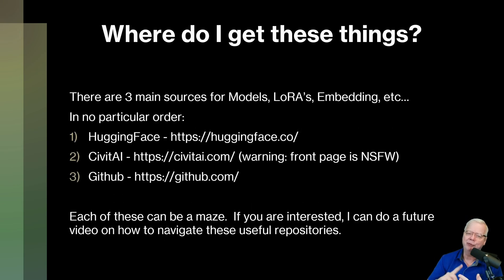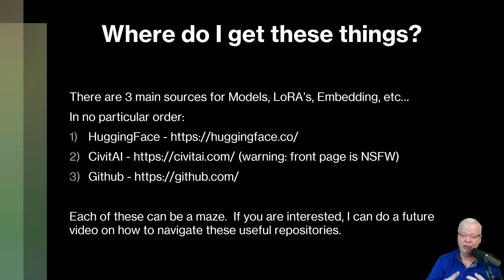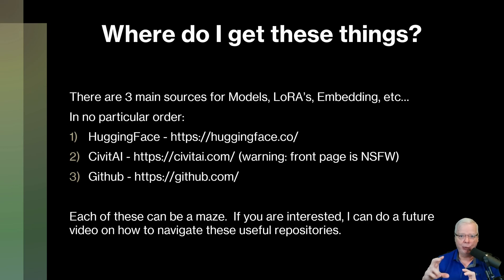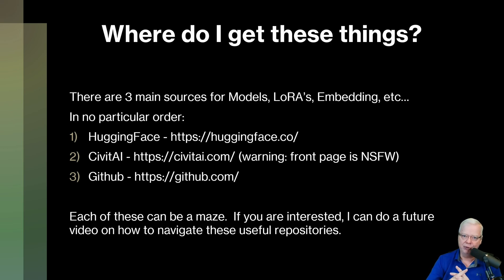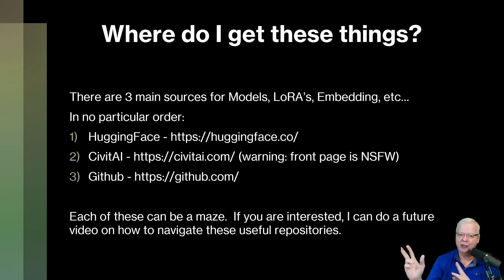Now you're asking: where do I get these LoRAs, embeddings, and models? That comes from three main sources. First, there's Hugging Face at huggingface.co. Then there's Civit AI at civitai.com — fair warning, the front page is generally not safe for work, so be careful where you open that. And then there's GitHub at github.com, which is for far more than just Stable Diffusion files. Any one of these can be a maze, so I recommend starting with Civit AI or Hugging Face since their user interface is much friendlier, though some of the better tools tend to be on GitHub.